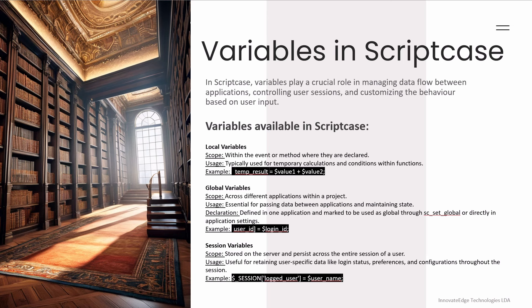Within Scriptcase we have local variables, which are typically declared within an event, a method, or a library. Those provide temporary storage — data that we condition within our functions and process accordingly. For example: $temp_result = $value_one + $value_two. So here we are saying value one plus value two equals temp result.